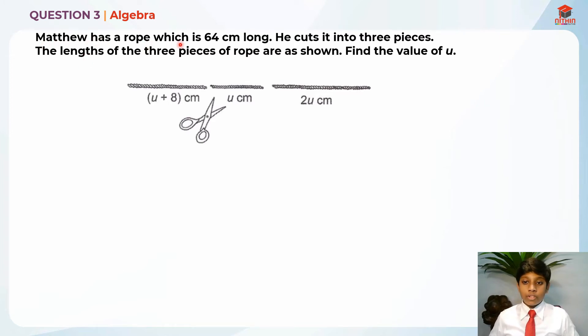Matthew has a rope which is 64 cm long. He cuts it into 3 pieces. The lengths of 3 pieces of the rope are shown. Find the value of U. So this is the 3 pieces of rope, and they add up to 64 cm, right?